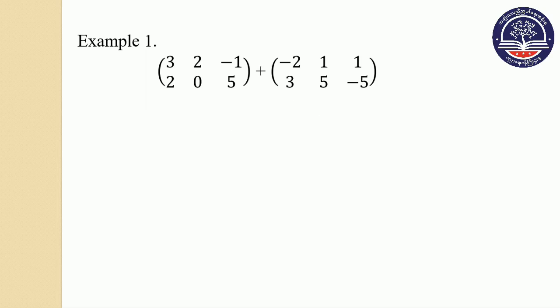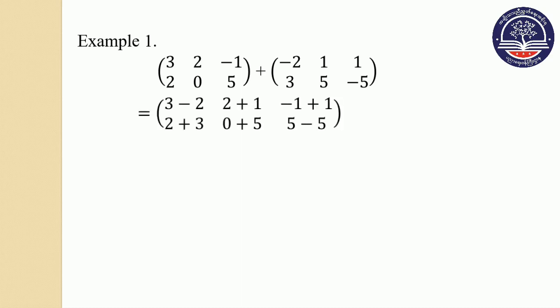This is a two by three matrix added to another two by three matrix. The corresponding entry: first row, first column is three minus two; first row, second column is two plus one; first row, third column is minus one plus one; second row, first column; second row, second column is five minus five.